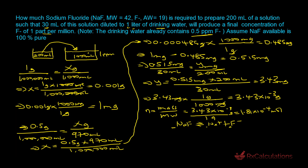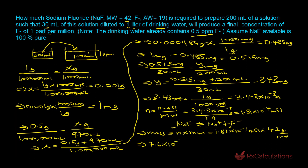Therefore, moles of sodium fluoride = 1.81 × 10⁻⁴ mol. Mass of sodium fluoride = moles × molecular weight = 1.81 × 10⁻⁴ mol × 42 g/mol = 7.6 × 10⁻³ grams. Converting to milligrams: 7.6 × 10⁻³ g × 1000 mg/g = 7.6 milligrams of sodium fluoride needed to prepare the 200 mL stock solution.